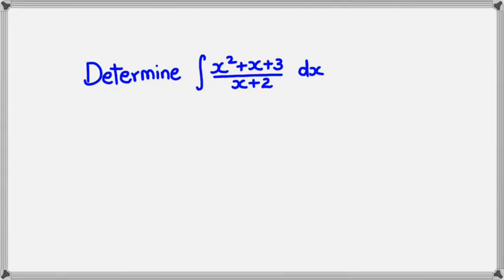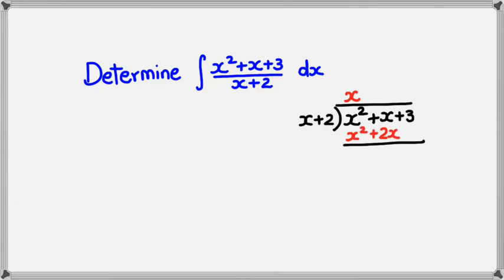So the only thing we can do here is use long division to separate it into a quotient, a remainder, and a divisor. So I'm going to have x plus 2 and x squared plus x plus 3 here. I know that I need to multiply by x first to get x squared plus 2x. Subtracting this I would get 0 and x minus 2x would be minus x.